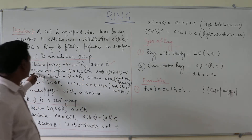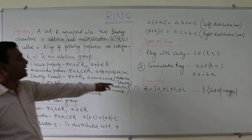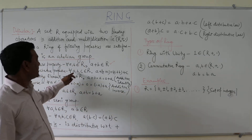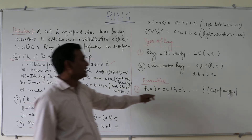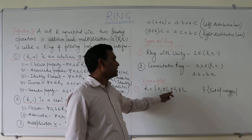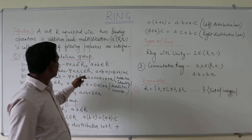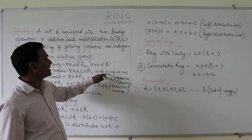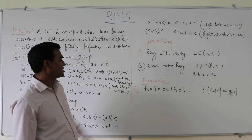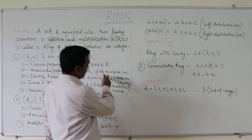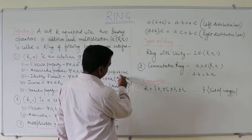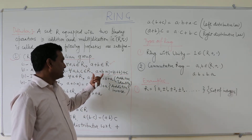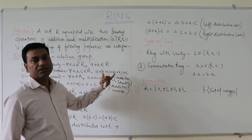The second property is the associative property. If we take three elements from this set, say A, B, and C — let us say 1, 2, and 3 — then (A + B) + C equals A + (B + C). You can find out the addition of these and they are also equivalent, so the associative property holds.